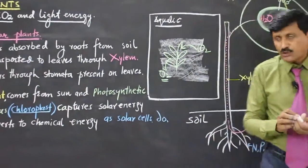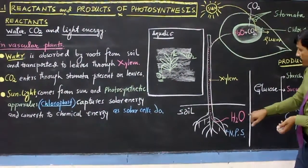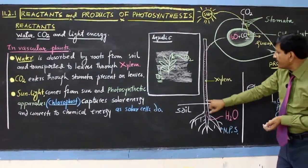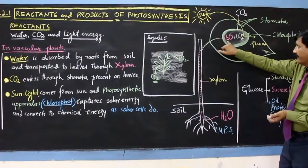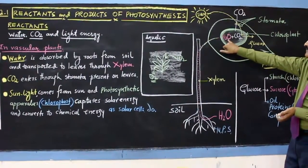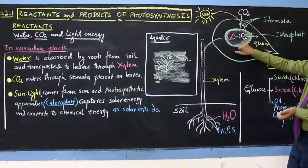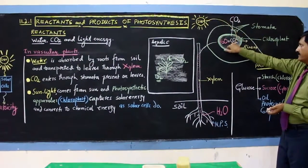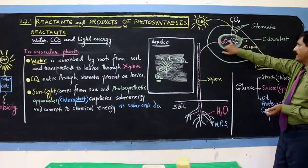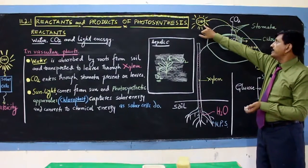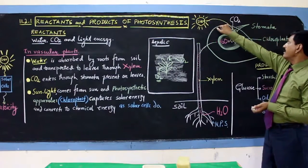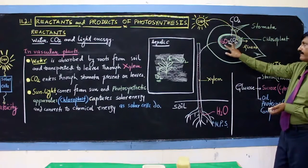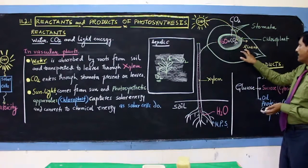In the case of vascular plants — vascular plants mein, is leaf ke andar, water pahuncha through the xylem from the soil into the leaf, into the chloroplast. Then, carbon dioxide through the stomata into the chloroplast. Then, chloroplast captures the solar energy, aur solar energy yahan par jab pahunchi, to chemical reaction start ho gaya, aur yahan par ban gaya glucose.